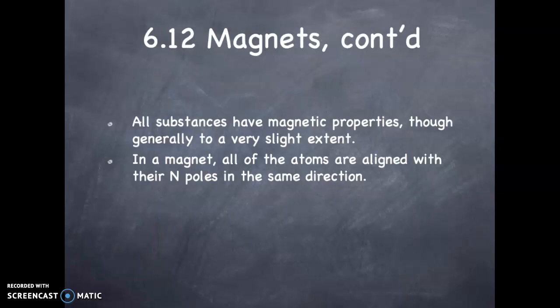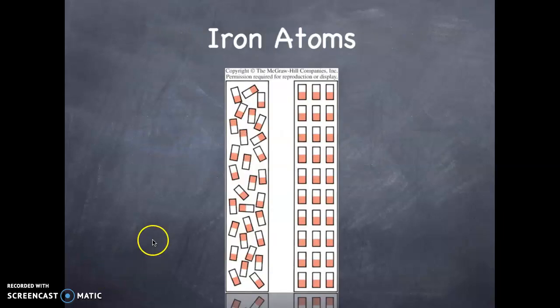All substances have magnetic properties, though generally to a very slight extent only. Only certain materials, ferromagnetic materials you will find, have a strong magnetic effect. In a magnet, all of the atoms are aligned with their north poles in the same direction effectively. This is an illustration here, where the poles of the atoms are unaligned, and here they are aligned, indicating ferromagnetism.